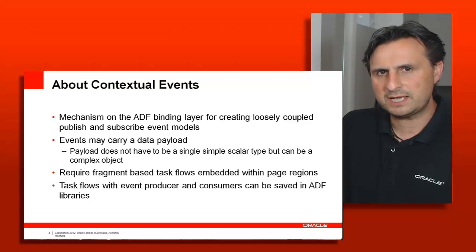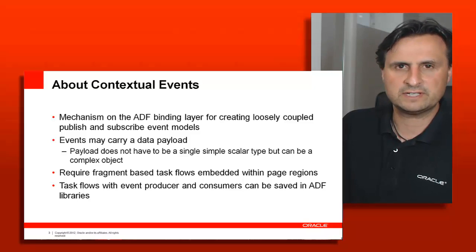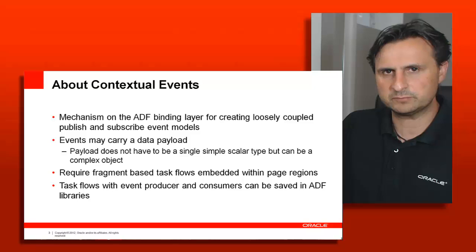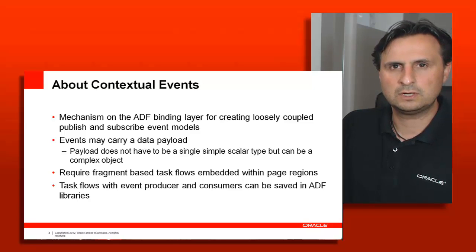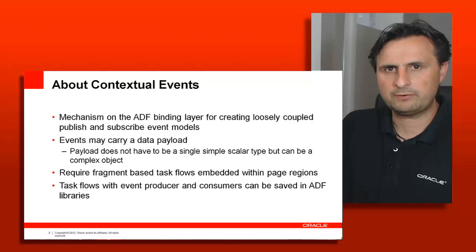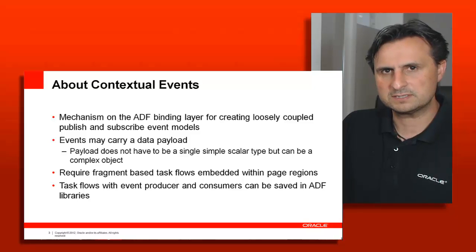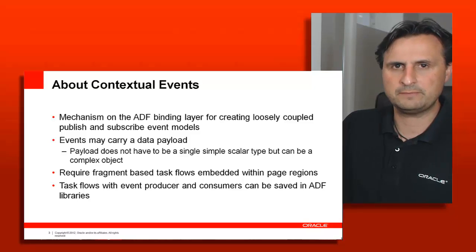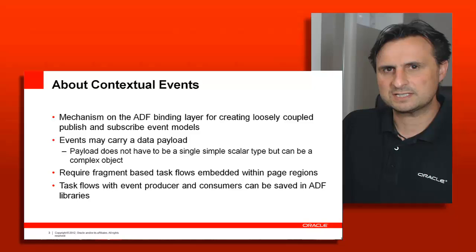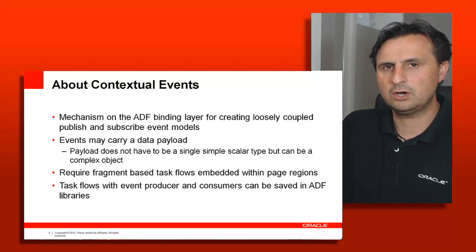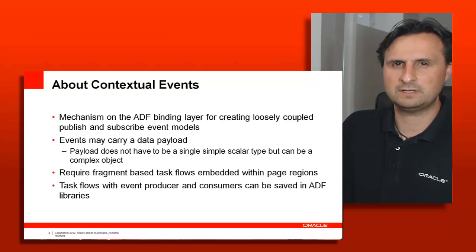Let's have a look first at contextual events. Contextual events is what I would call a silver bullet — it can be used in all region communication directions: parent to region, region to parent, or region to region. It's a publish-and-subscribe mechanism on the binding layer, so every view that is exposed through a region on a page can participate in sending or receiving events.